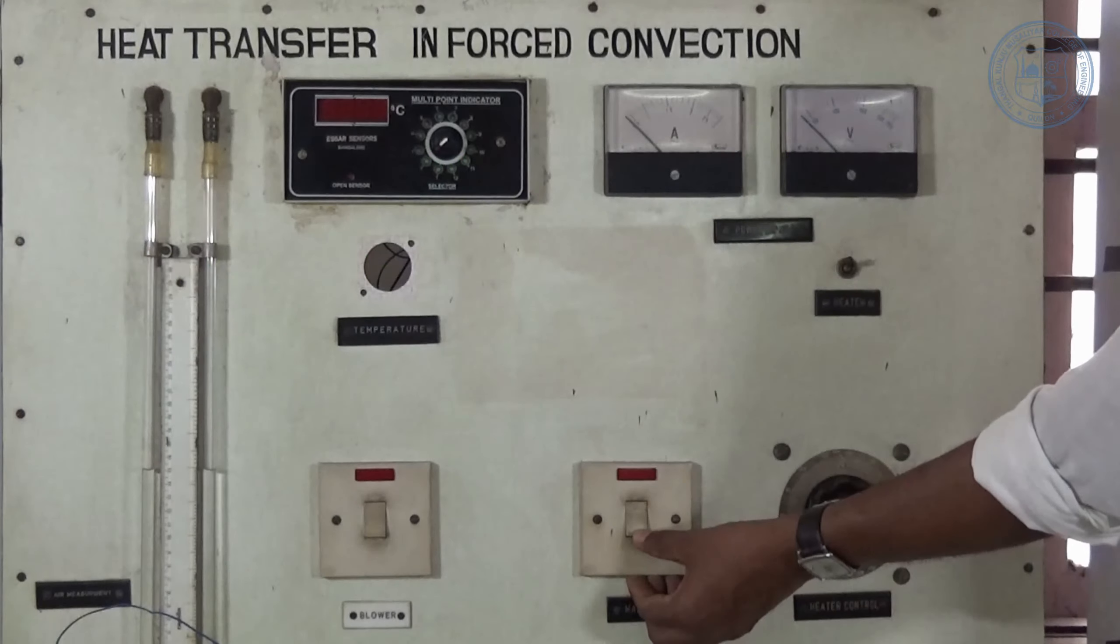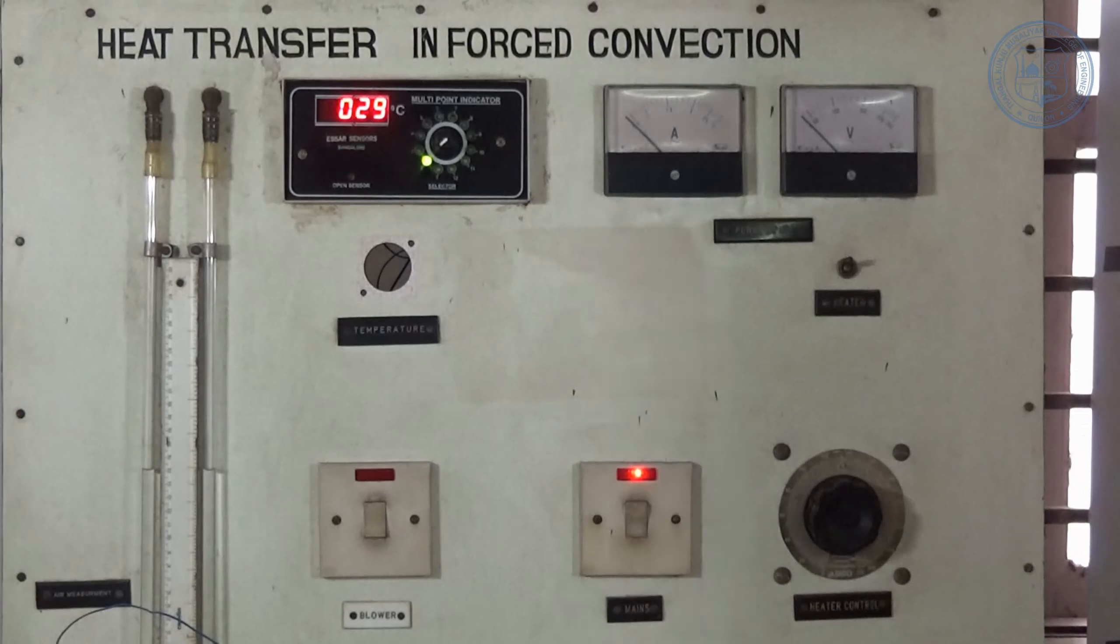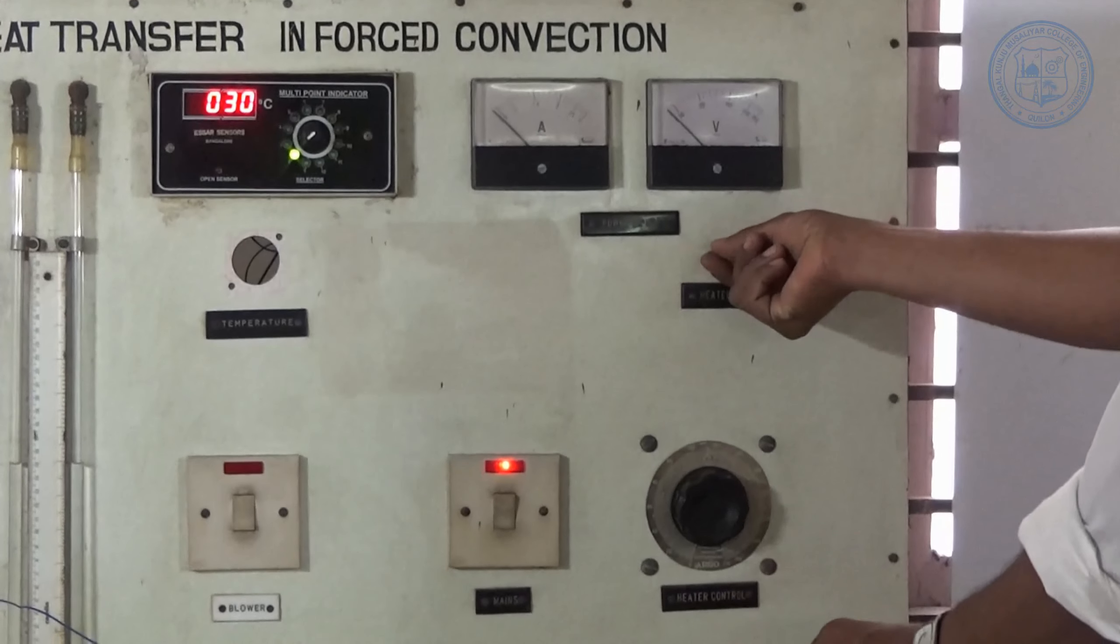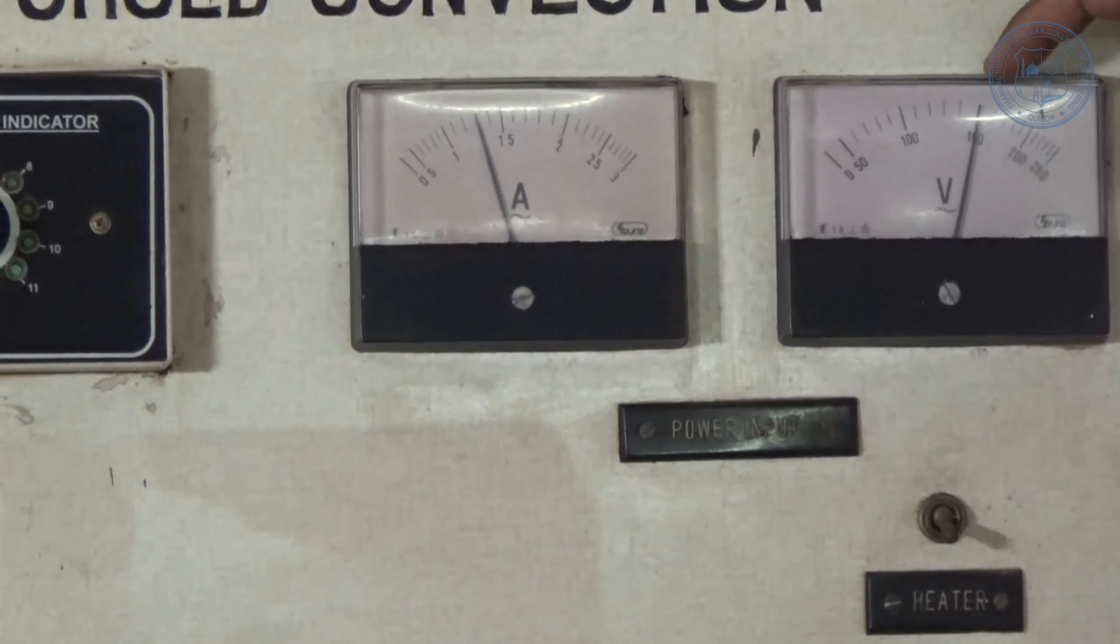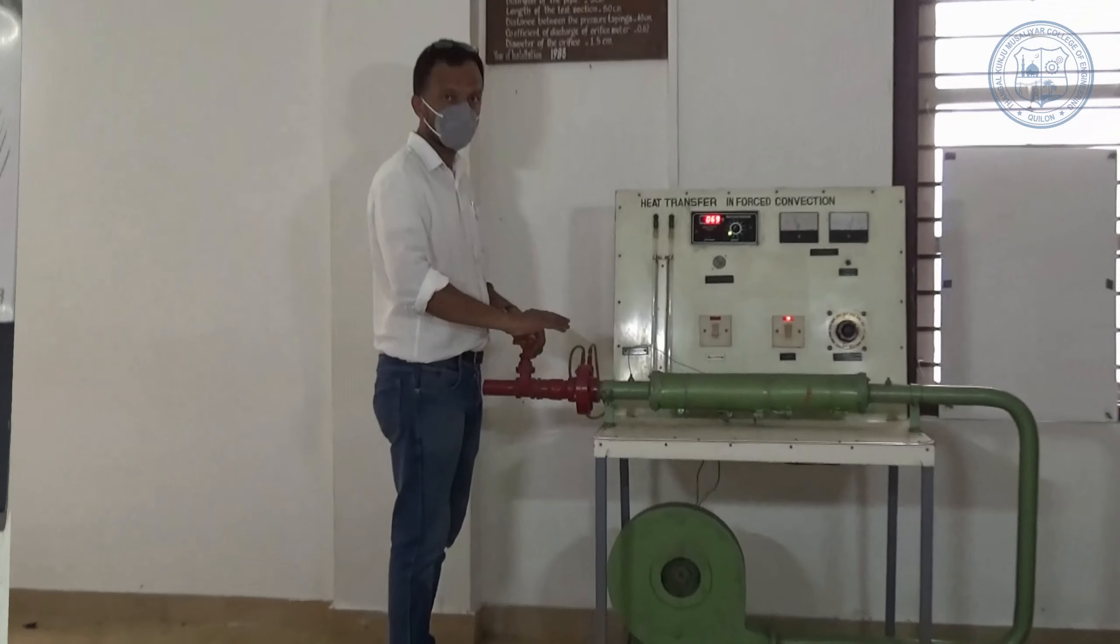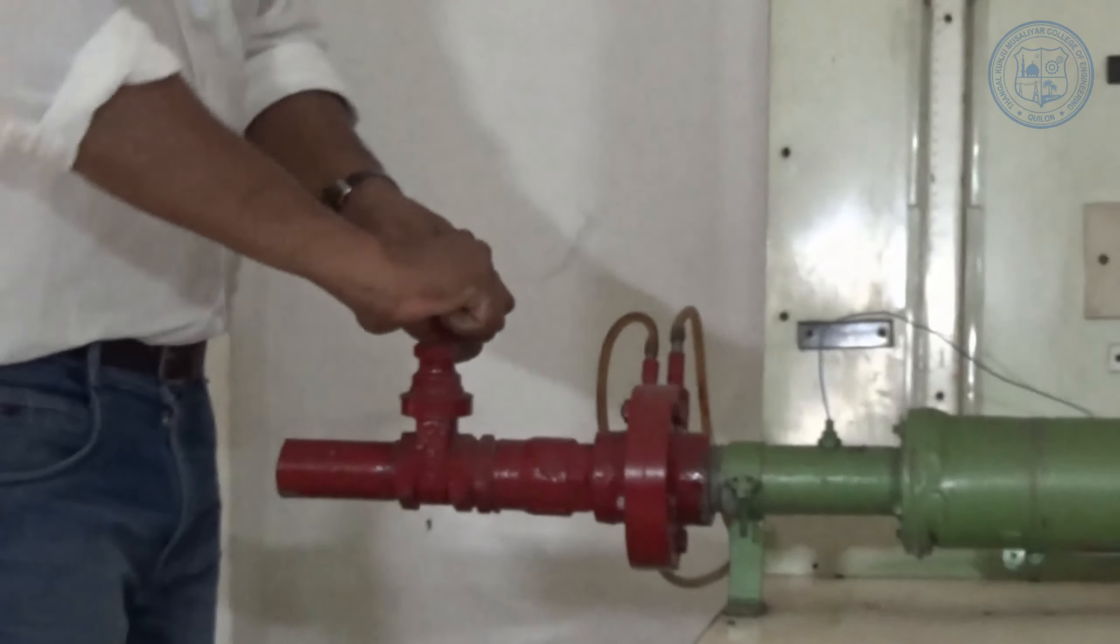Switch on the experiment setup. Ensure that the dimmer stat is in 0 position. Switch on the heater. Adjust the dimmer stat to the desired voltage. Here we set the voltmeter reading as 150 volts. Switch on the air blower, keeping the delivery valve in closed position.